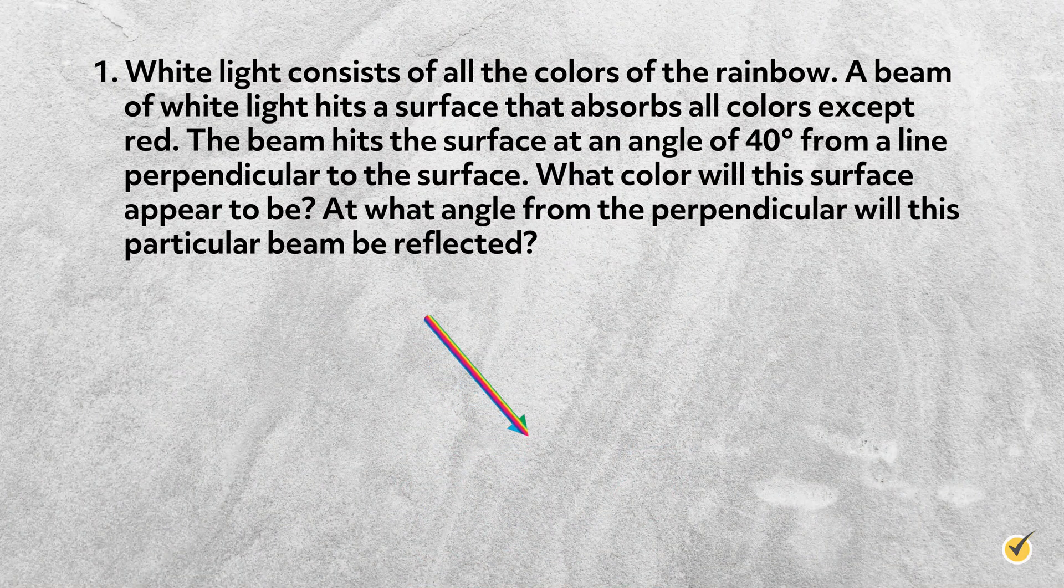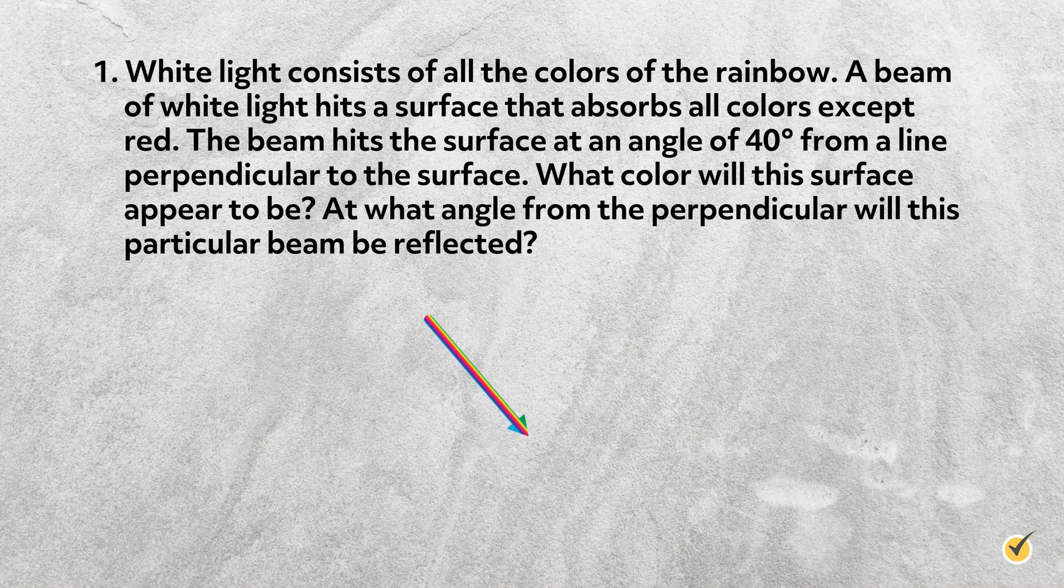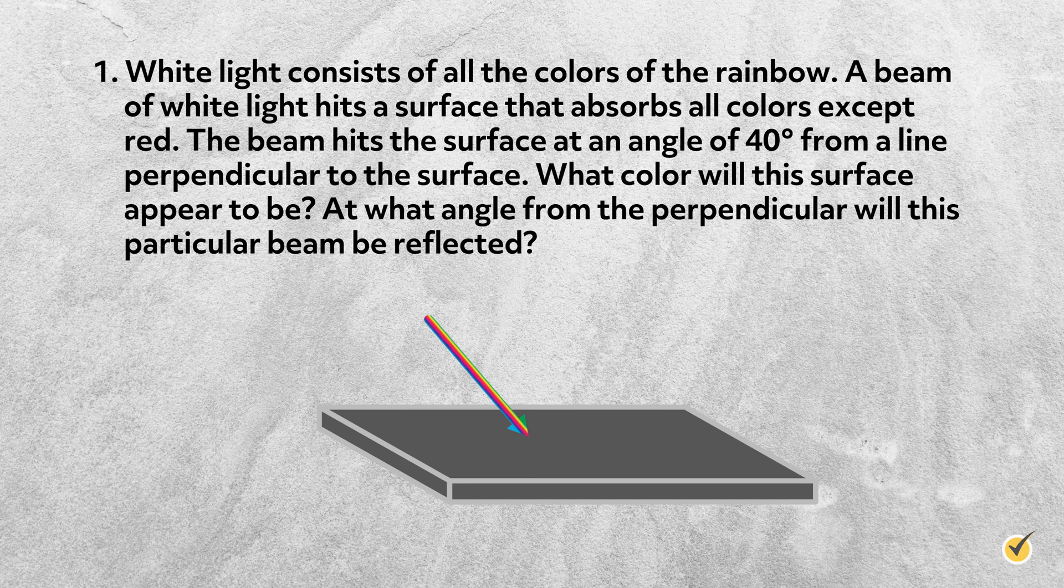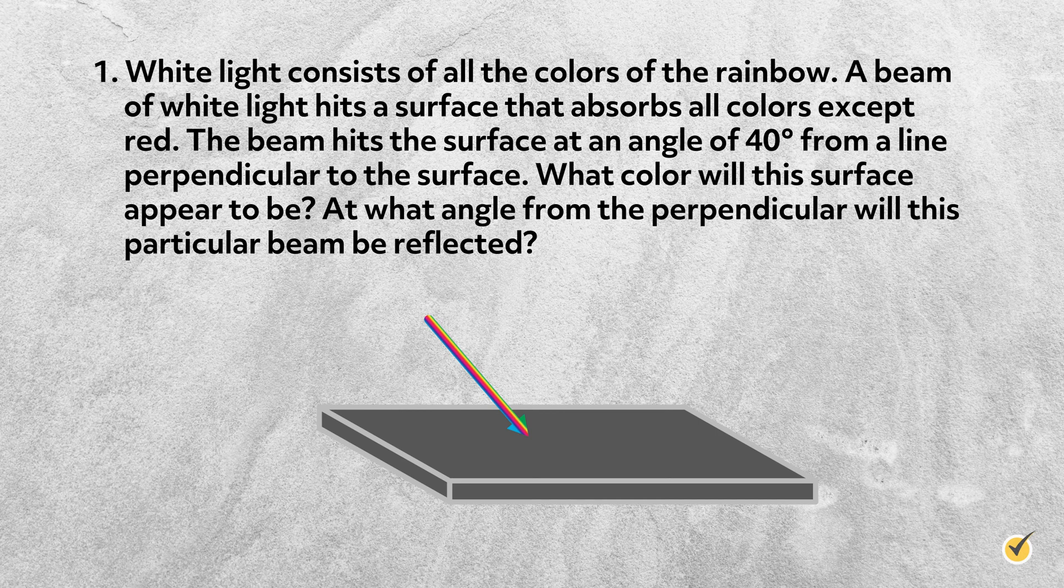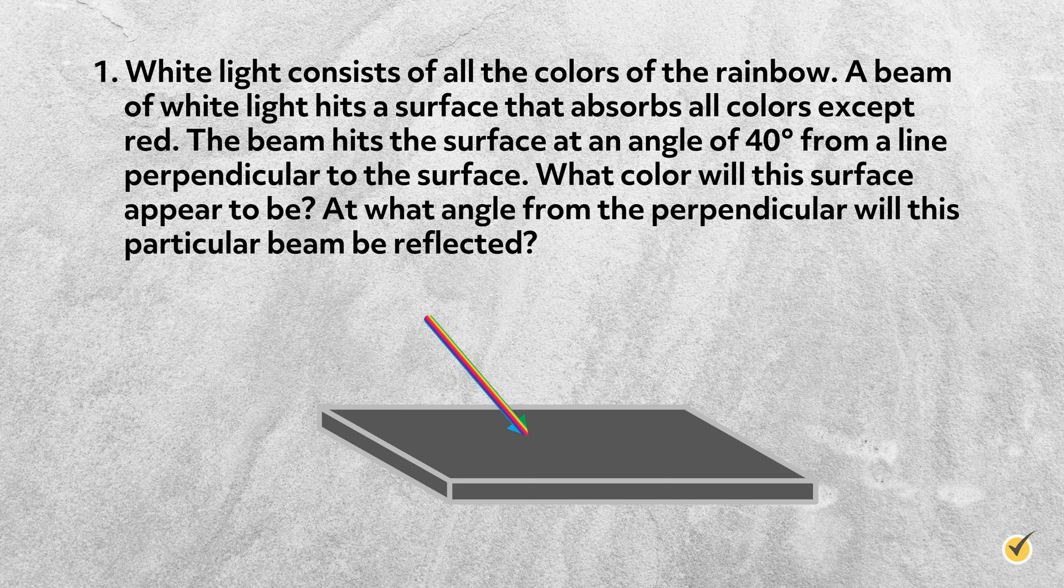Okay, now that we've discussed reflection, transmission, and absorption, let's check your understanding with a couple of questions. Number one: White light consists of all the colors of the rainbow. A beam of white light hits a surface that absorbs all colors except red. The beam hits the surface at an angle of 40 degrees from a line perpendicular to the surface. What color will the surface appear to be? At what angle from the perpendicular will this particular beam be reflected?